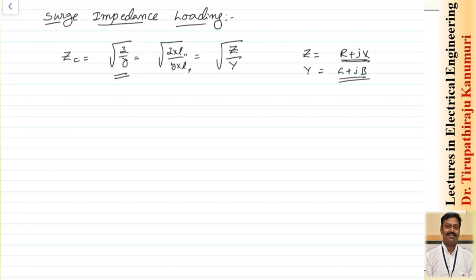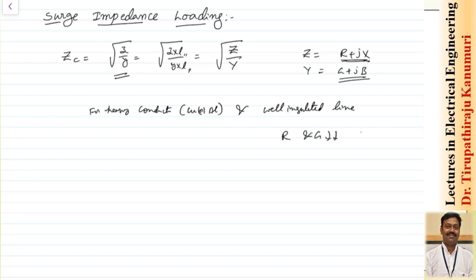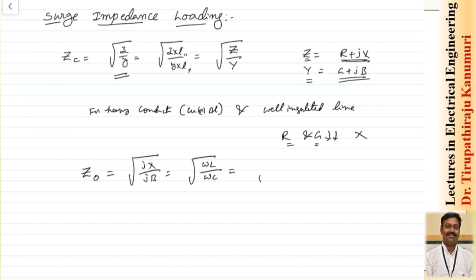Practically, for heavy conductors made of copper or aluminium on well-insulated lines, the values of r and g are very small and can be neglected. So z becomes jx and y becomes jb. The impedance of this loss-free transmission line is called the surge impedance, equal to √(jx/jb) = √(L/C). The surge impedance is thus the ratio of L to C of your system.